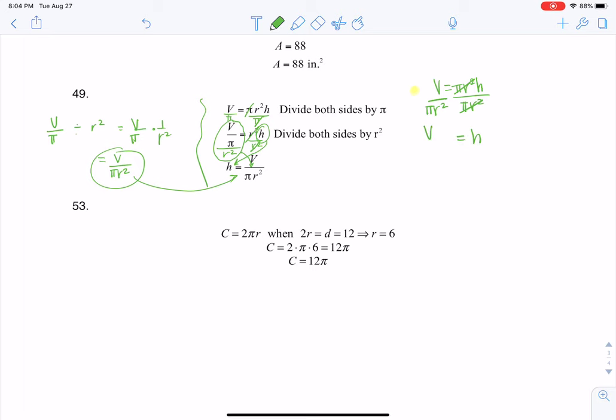That leaves me with an H on this side, and V equaling pi over R squared. And usually we write the variable that we're solving for on the left side of the equation. It's not required, but I do want you to see where all of that's coming from. So that's just a quick look at number 49.